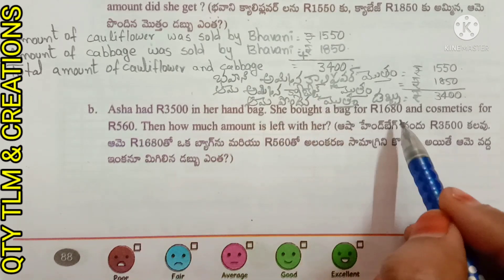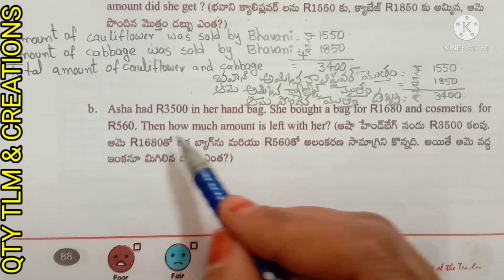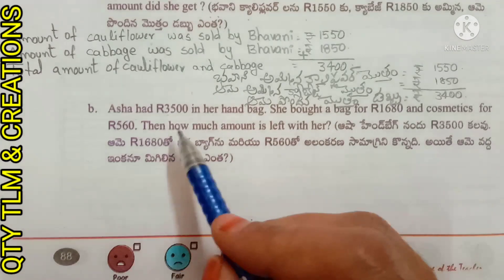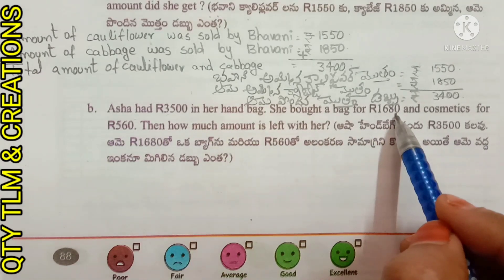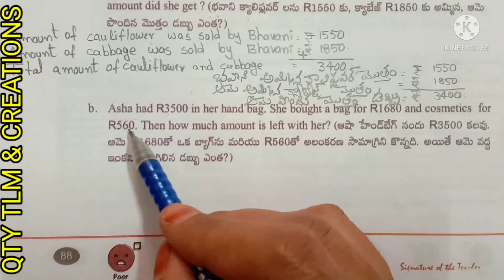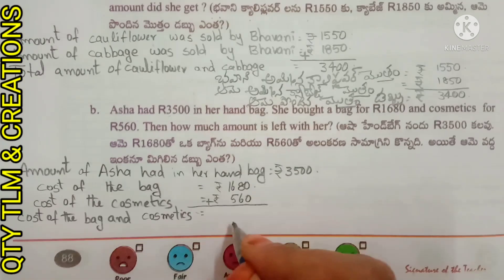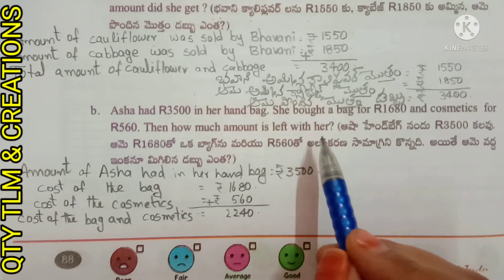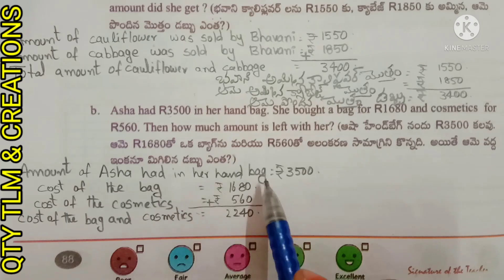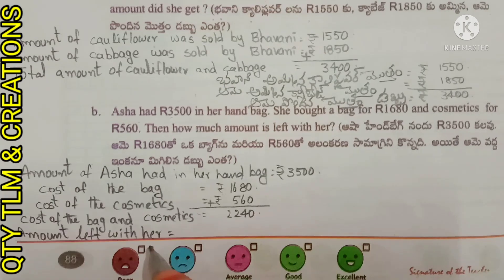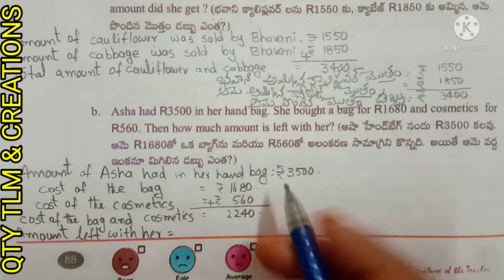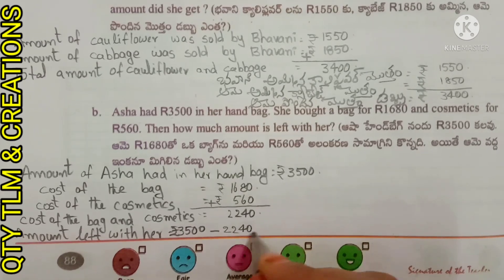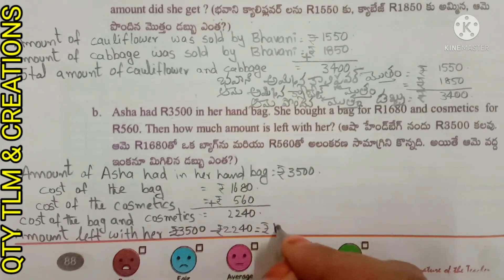Next question: Asha had 3500 rupees in her handbag. She bought a bag for 1680 rupees and cosmetics for 560 rupees. How much amount is left with her? Cost of bag equals 1680 rupees, cost of cosmetics equals 560 rupees. Total cost equals 2240 rupees. Amount left with Asha equals 3500 minus 2240 equals 1260 rupees.